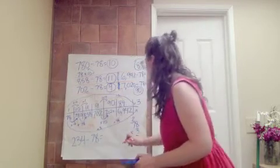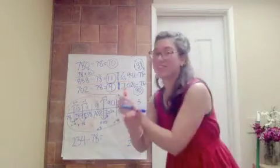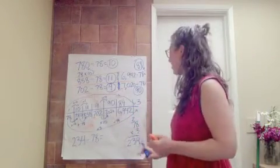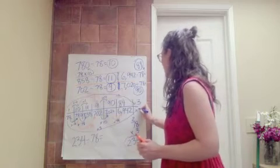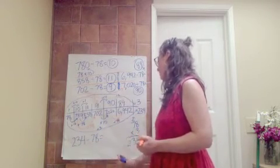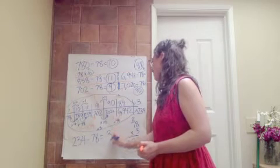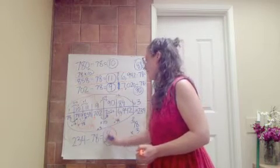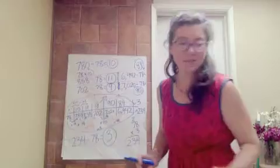So 78 times 3 equals 234. Or 234 divided by 78 equals 3. Awesome, friends.